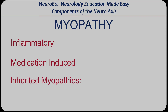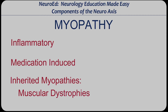Pause the video for a second and think about what an inherited or congenital myopathy is called. A lot of students are surprised by this answer, but a muscular dystrophy is nothing more than an inherited or congenital myopathy. Some examples of muscular dystrophies you should be aware of would be Duchenne's, Becker's, or limb girdle muscular dystrophy.